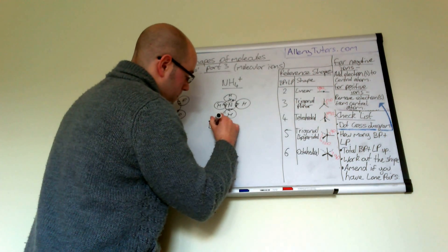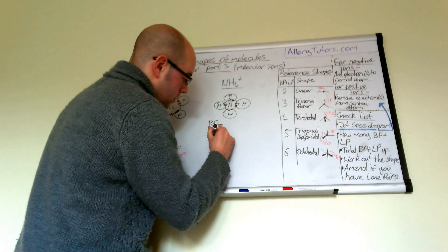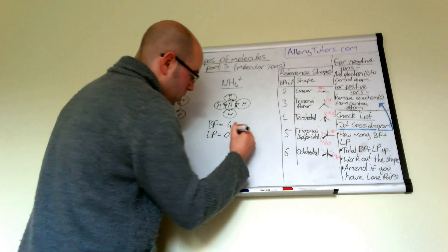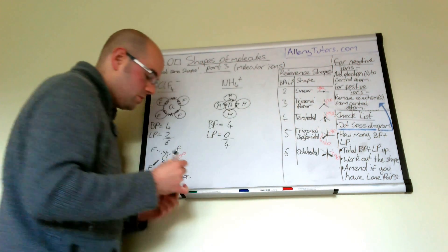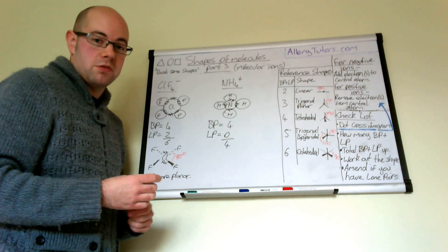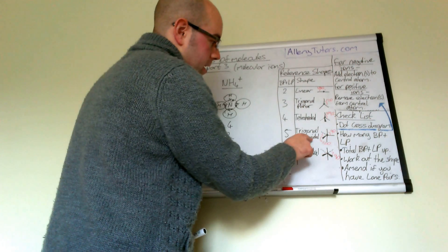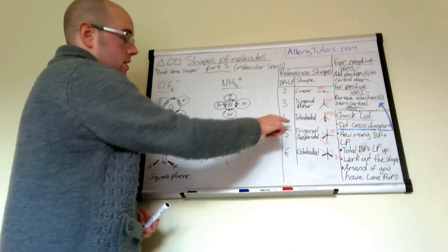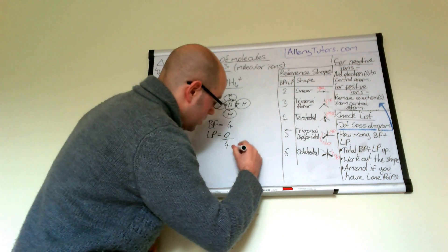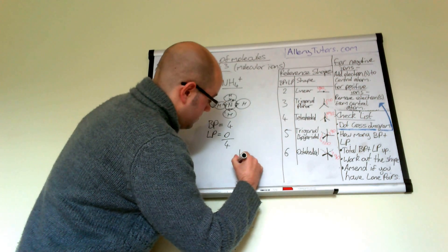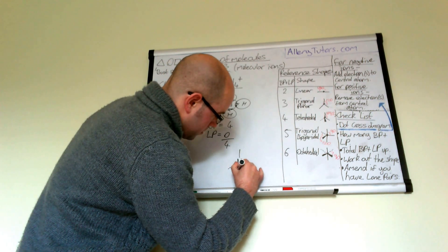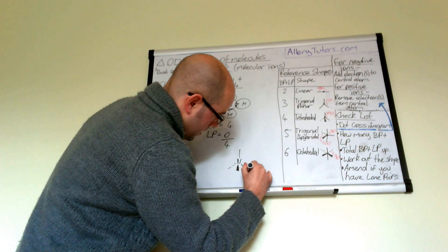Once we've worked out our actual shape, we see that we've got bond pairs and lone pairs to work out. You can see we've got four bond pairs and we don't have any lone pairs, which totals us up to four in total. Because we don't have any lone pairs to take into account for this molecule, we can say that this is just standard tetrahedral. So our tetrahedral molecule will look something like this: we have nitrogen, one hydrogen going away, one coming towards us, and one like that.